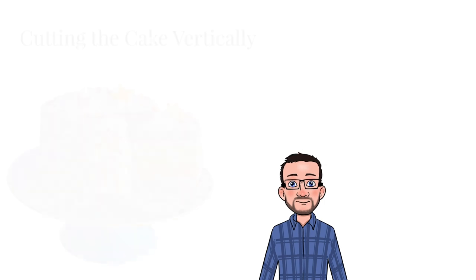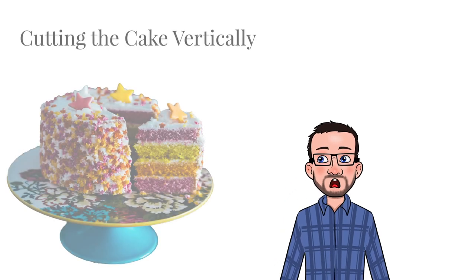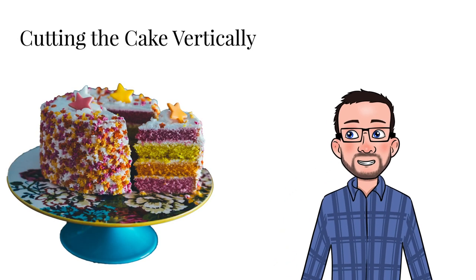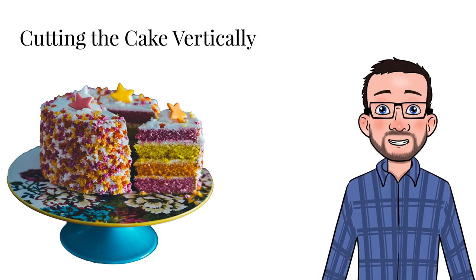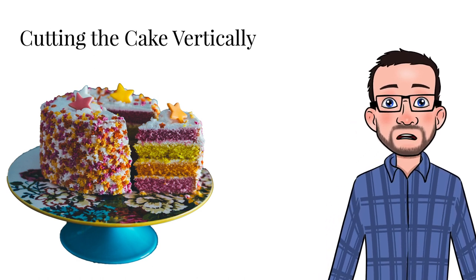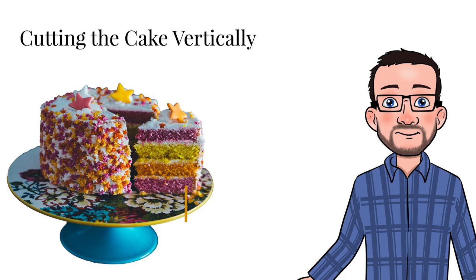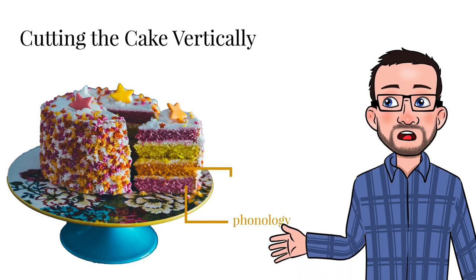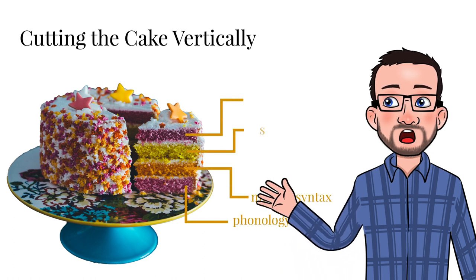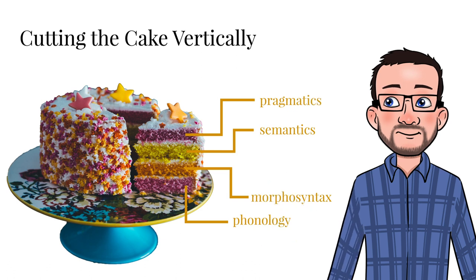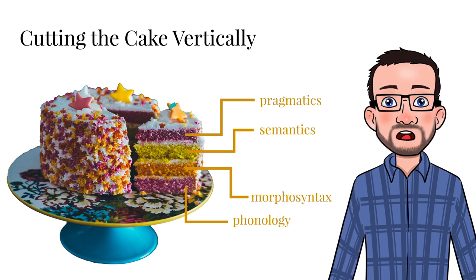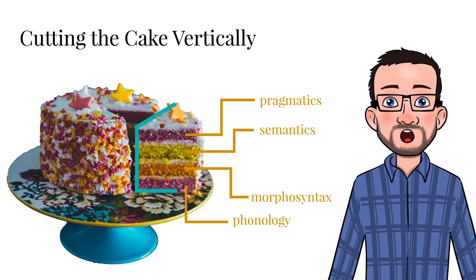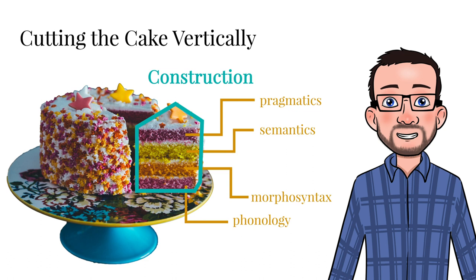Now what does this quote mean? If you consider all potential sources of linguistic information as a layered cake, a traditional approach would force you to cut the cake in horizontal slices — a scoop of phonology, a bite of morphosyntax, and a topping of semantics and pragmatics. Construction grammarians, however, can cut the cake vertically and gobble it up as a whole, because constructions access all layers of linguistic information simultaneously. This even includes social considerations and multimodal information.